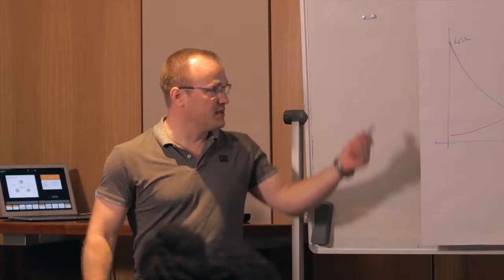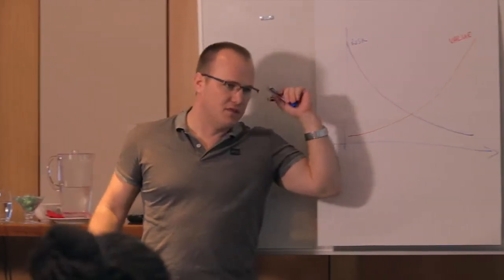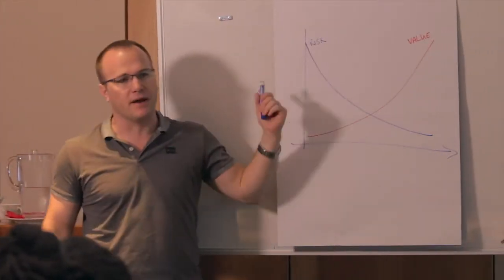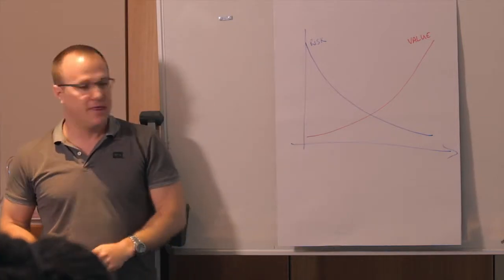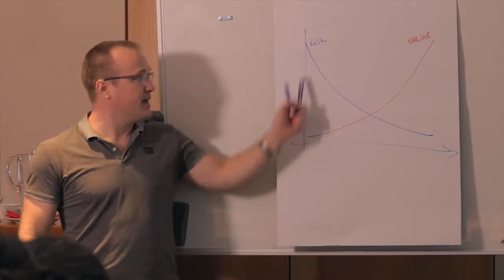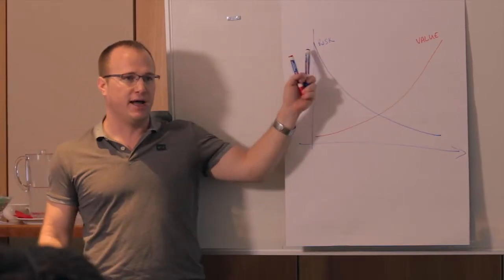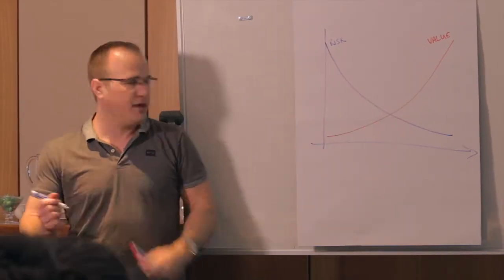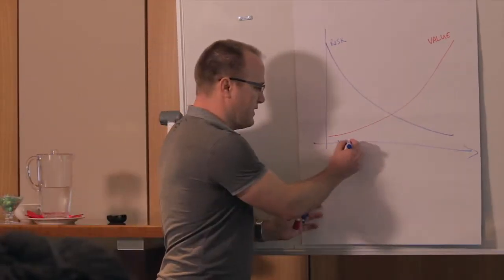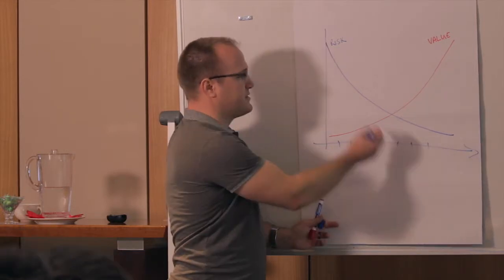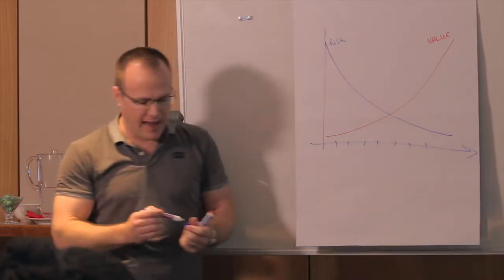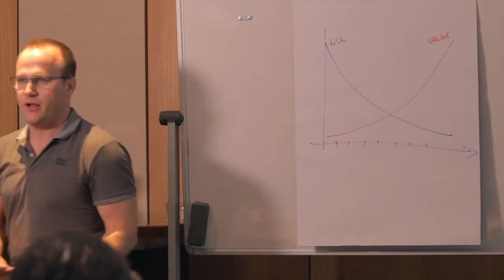So when you're building startups, this is really the graph behind every single startup, behind every single idea. Everything starts out as a small idea and it has an exceptionally high amount of risk. And your job is to move along this line, the x-axis of reducing the risk. And as you reduce the risk, you increase your valuation.